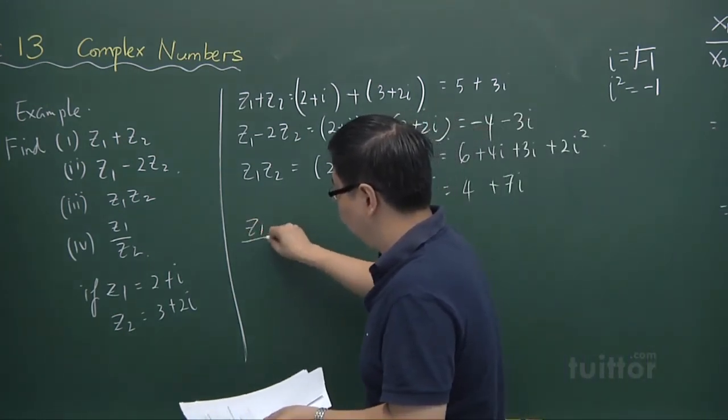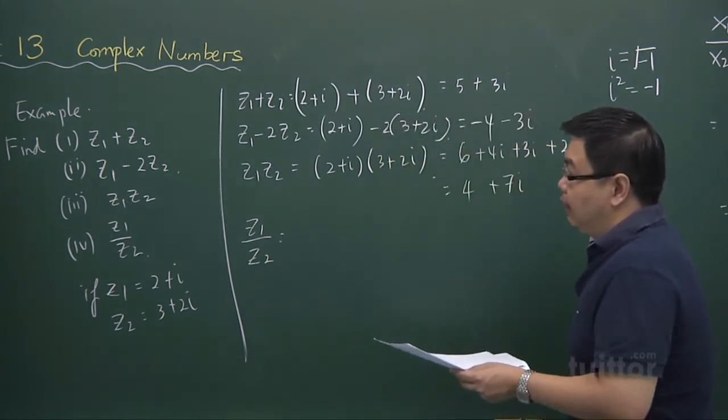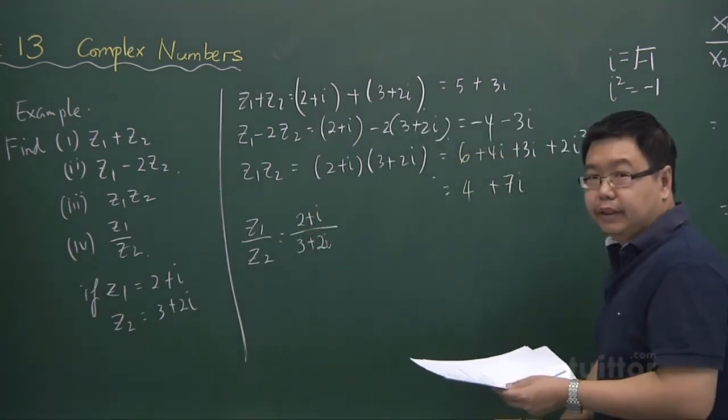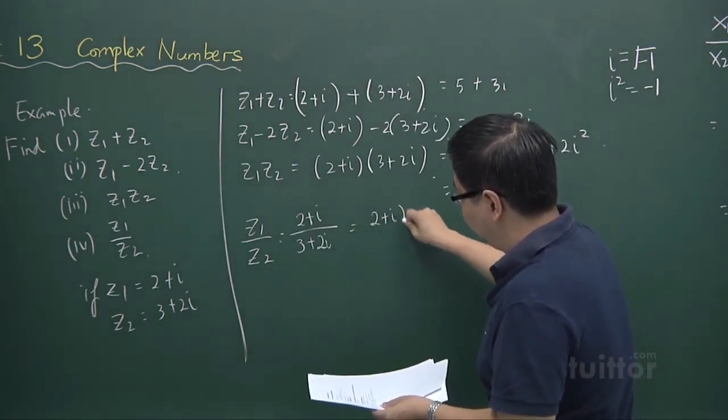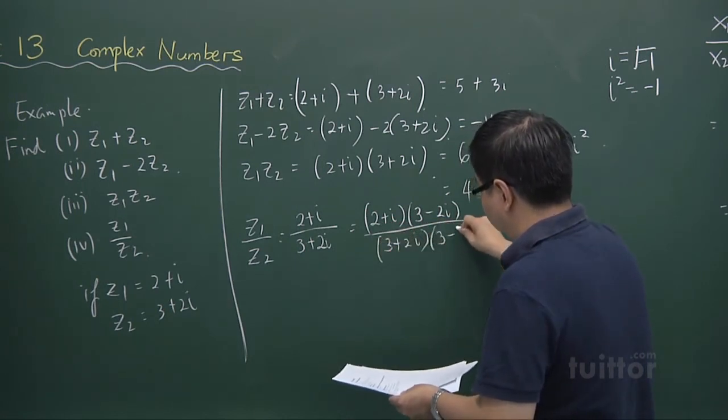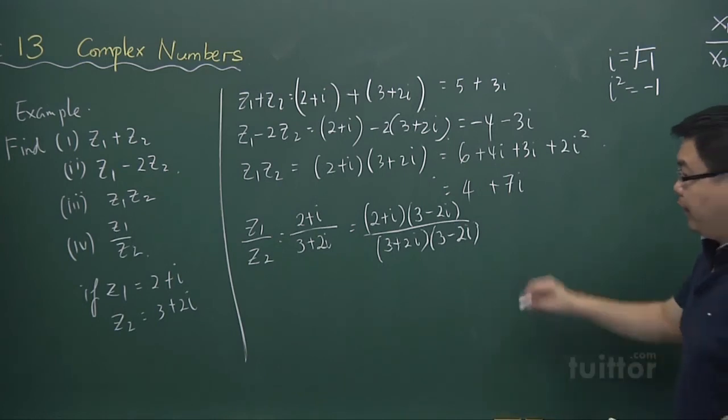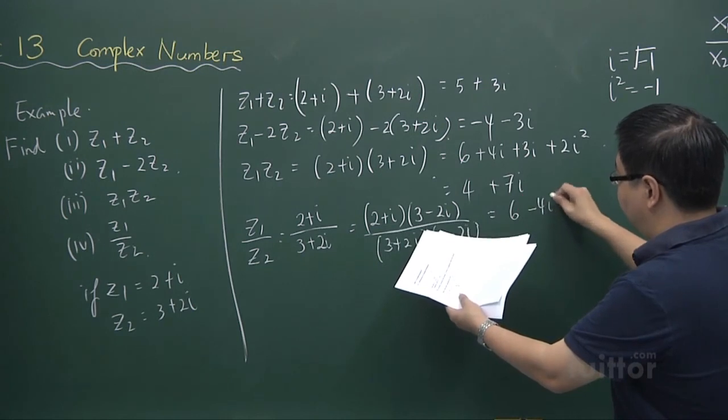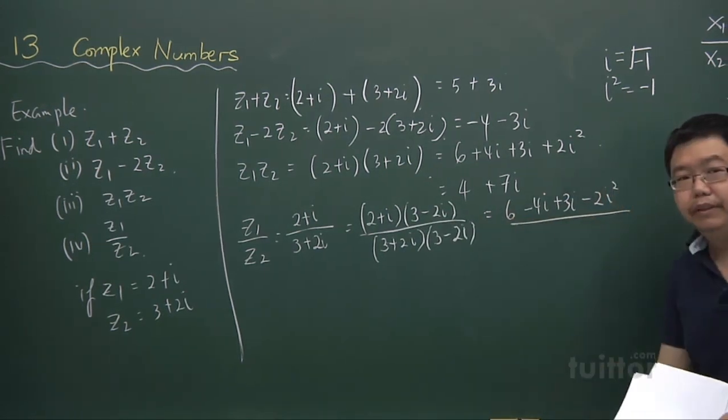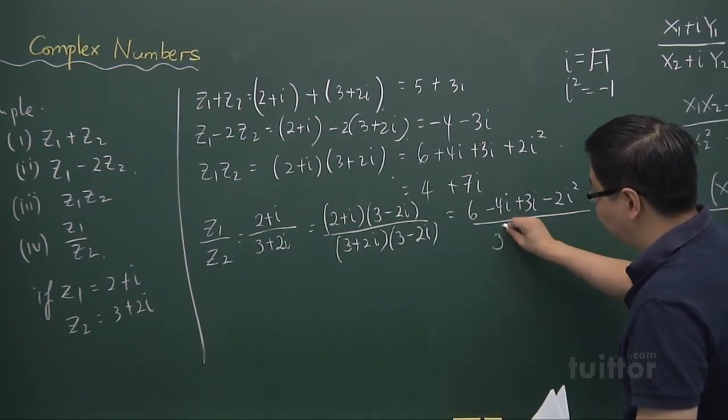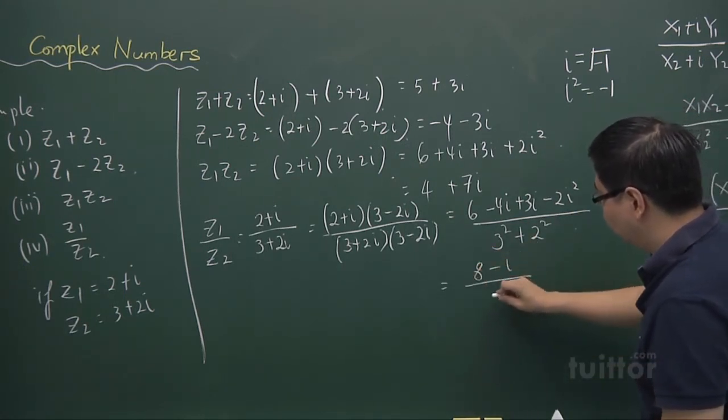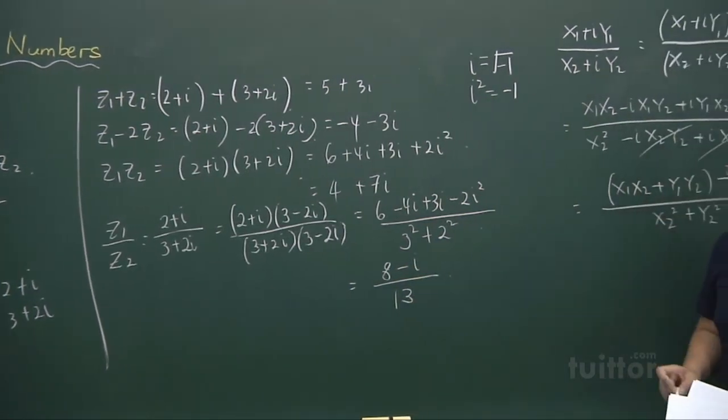Then how about the last one? Z1 over z2. Z1 is 2 plus i. Z2 is 3 plus 2i. And you want to divide. You can multiply by the conjugate. And what we have is 2 times 3 is 6, 2 times minus 2i is minus 4i, i times 3 is 3i, i times minus 2i is minus 2i squared. This 3 plus 2i times 3 minus 2i is 3 squared plus 2 squared. And so we'll have it as 8 minus i over 9 plus 4, 13. So that becomes the answer to the division.